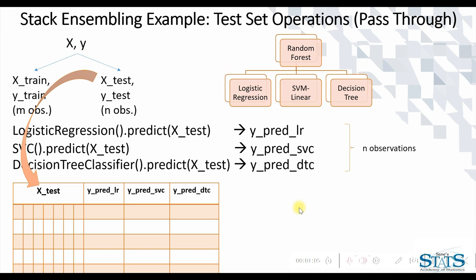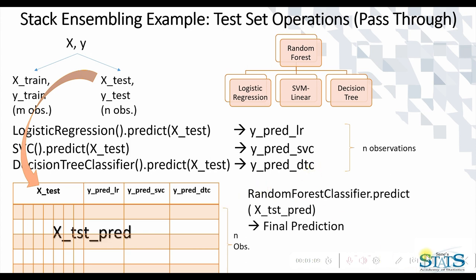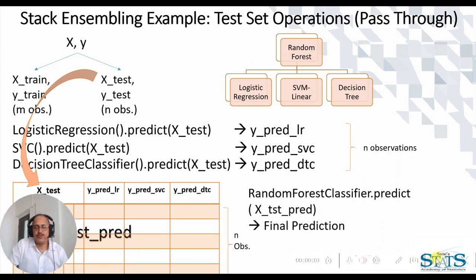So our final estimator now which we had built on all the features will be utilized with this pass-through option. It is often seen that the performance of the stack ensembler is better.